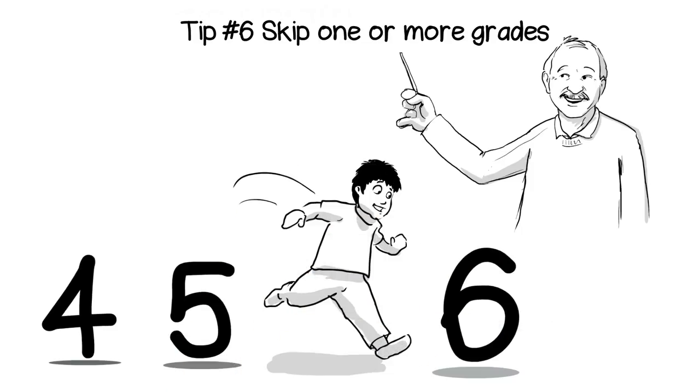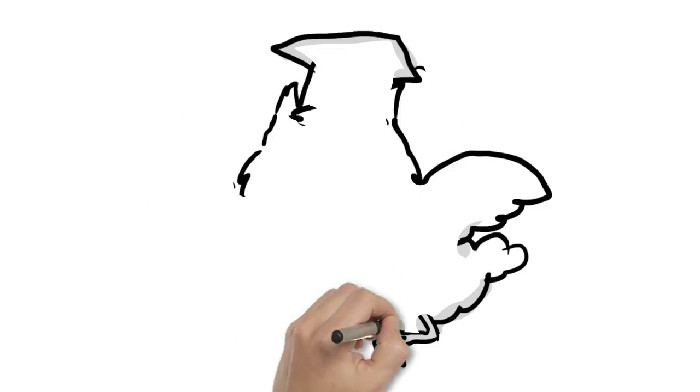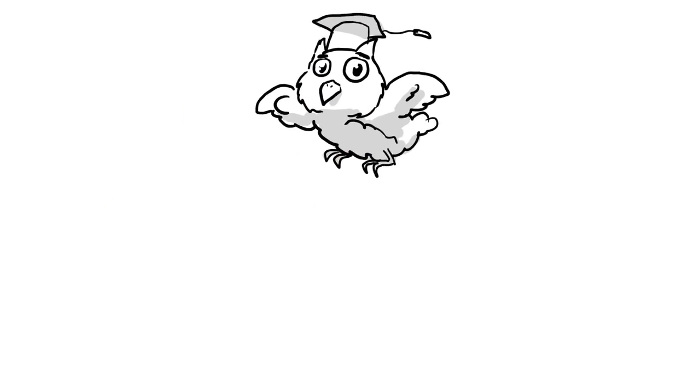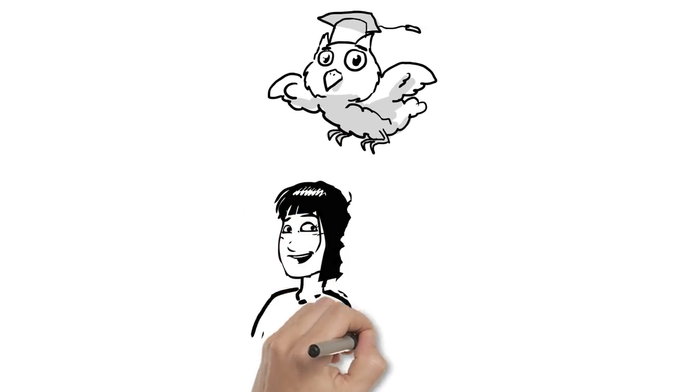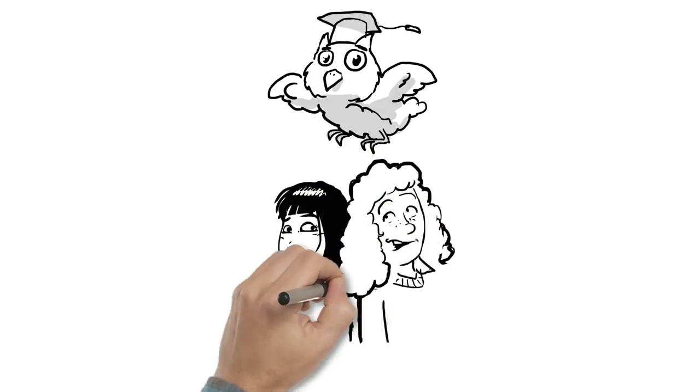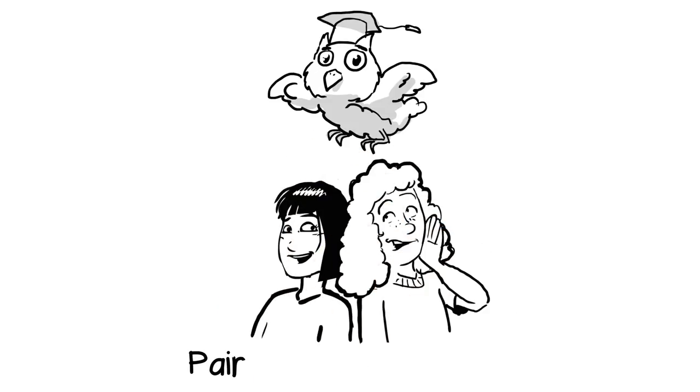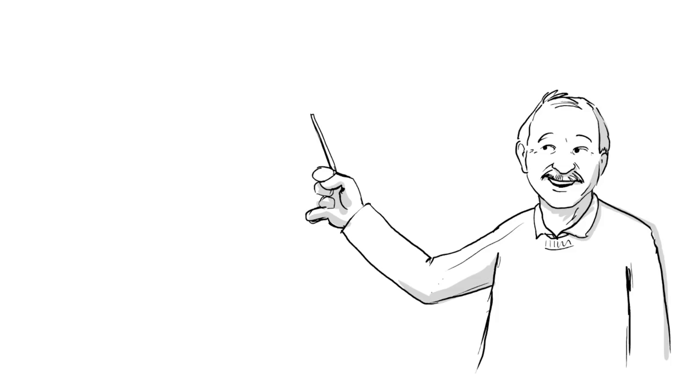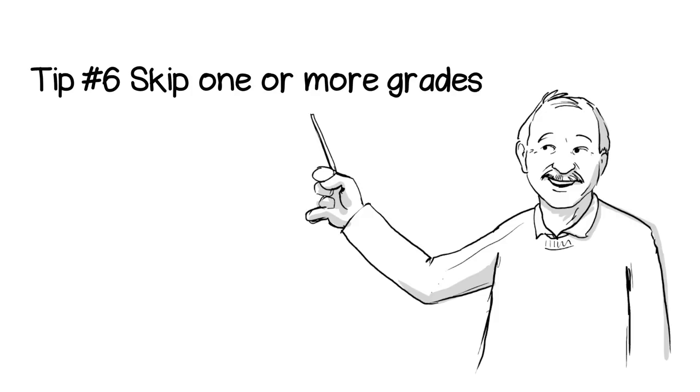Tip 6: Consider having a child skip one or more grades. Research clearly indicates that can be wise, as long as the student is capable and motivated, the receiving teacher enthusiastic, and the child paired with a popular child in the new class to teach the new child the ropes and help the child make friends. So, Tip 6: Consider talking with your principal about having a gifted child skip one or more grades.